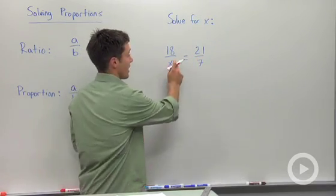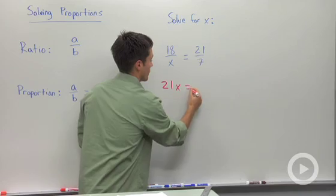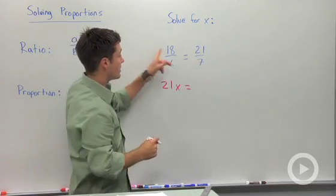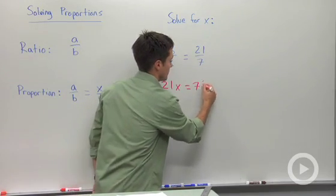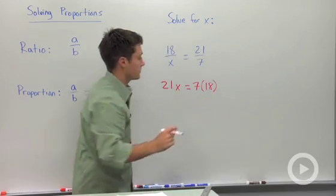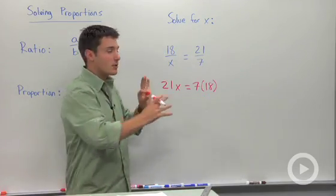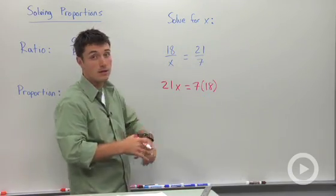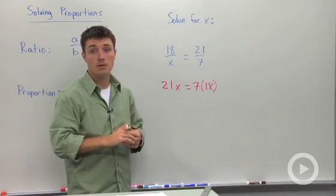So we could say that x times 21 is equal to 7 times 18. Math teachers cringe a little bit when they just say cross multiply, but it'll work for geometry.